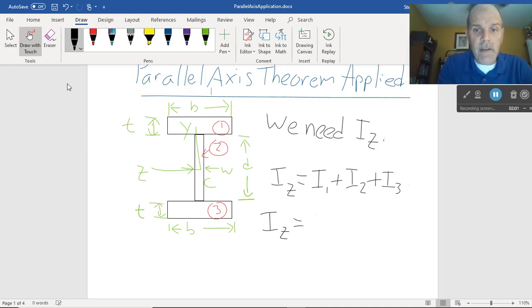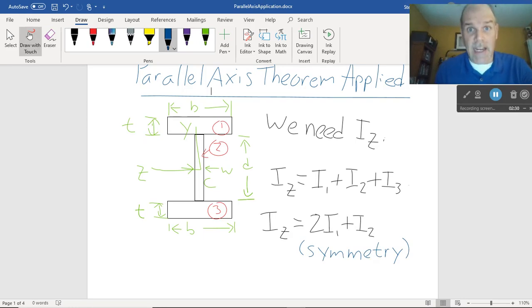And then what they do is they go even further and make another great observation, which is that Iz is equal to 2I1 plus I2 because it's symmetric. The moment of inertia of the top flange and the moment of inertia of the bottom flange about that z-axis, well, they're both equidistant from the z-axis and both the same size. So why shouldn't they have the same moment of inertia? There's no big deal. That's all great.